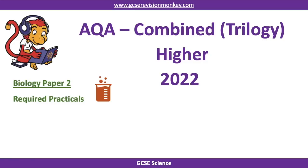Hello and welcome to this revision monkey video on the required practicals that are going to be in biology paper 2. This is for the AQA specification for combined scientists, that's the trilogy version of combined science, which means you do six exams at the end of the course.